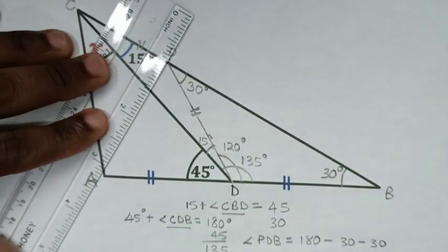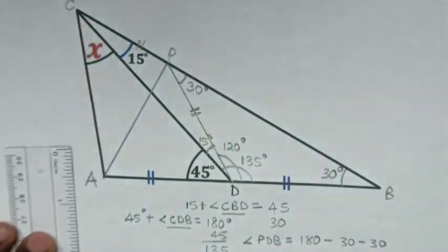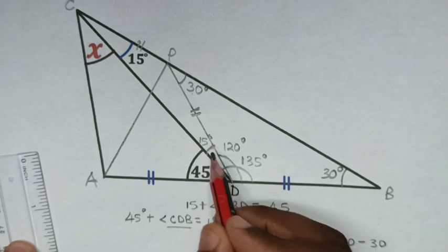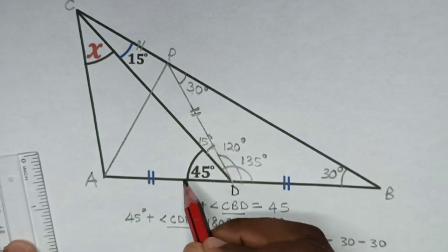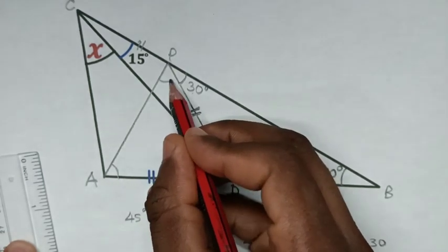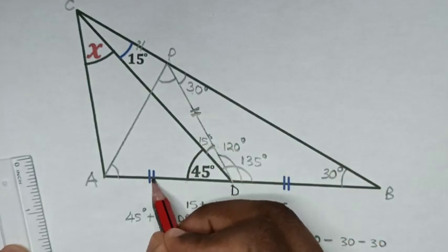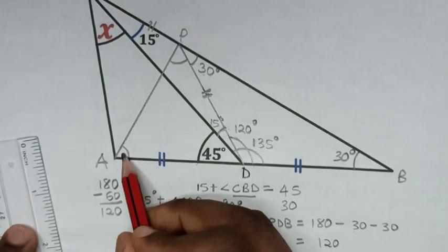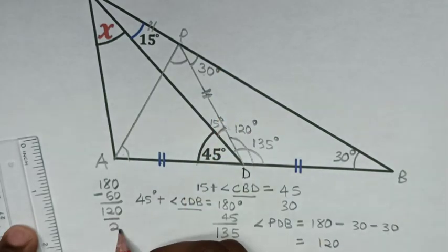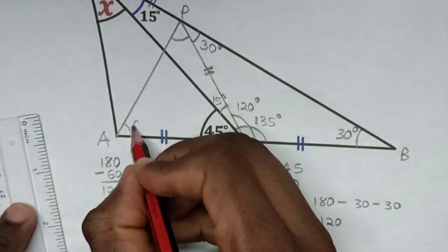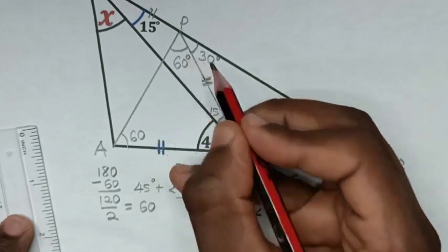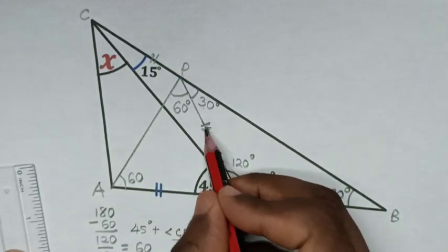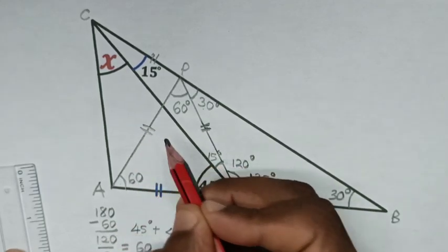Then in the next step we draw a line from this point to this point — line AP. Since this line is equal to this line and this angle is 45 plus 15 equals 60 degrees, this angle is the same as this angle. So 180 minus 60 is 120 degrees, divided by 2 is 60 degrees. All angles are 60 degrees, so this is an equilateral triangle.